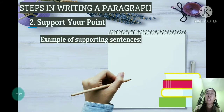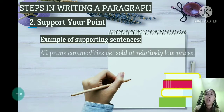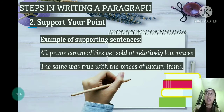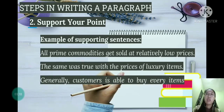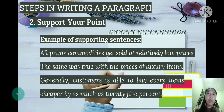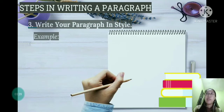Second, we have 'Support Your Point.' In making a paragraph, we also need supporting sentences. Examples of supporting sentences are: 'All prime commodities get sold at relatively low prices.' 'The same was true with the prices of luxury items.' 'Generally, customers are able to buy every item cheaper by as much as 25 percent.' These supporting sentences support our point — that market day was usually a bargain day sale in Santa Barbara.